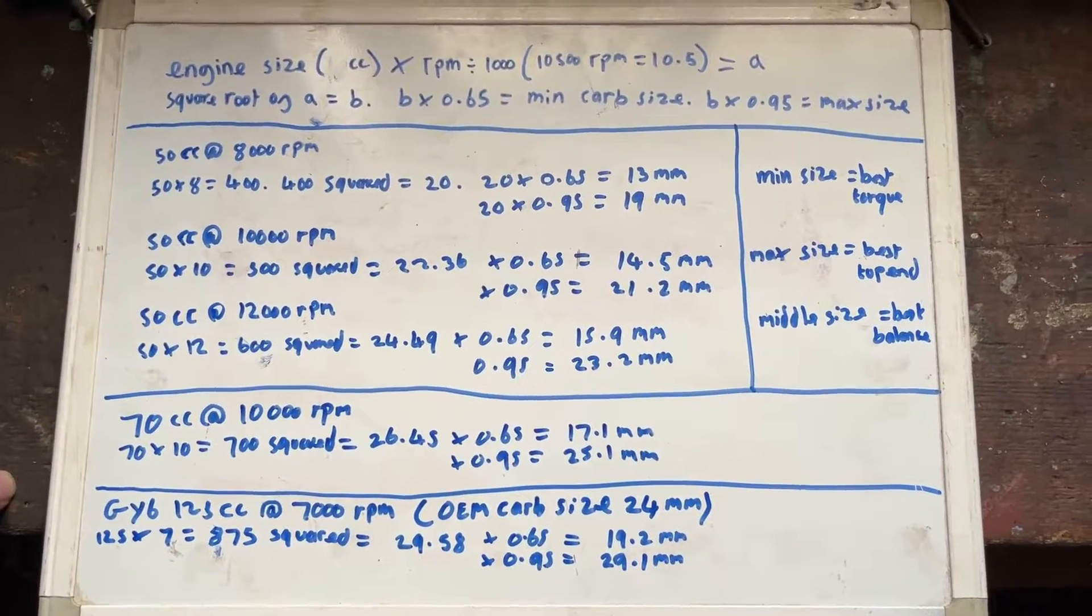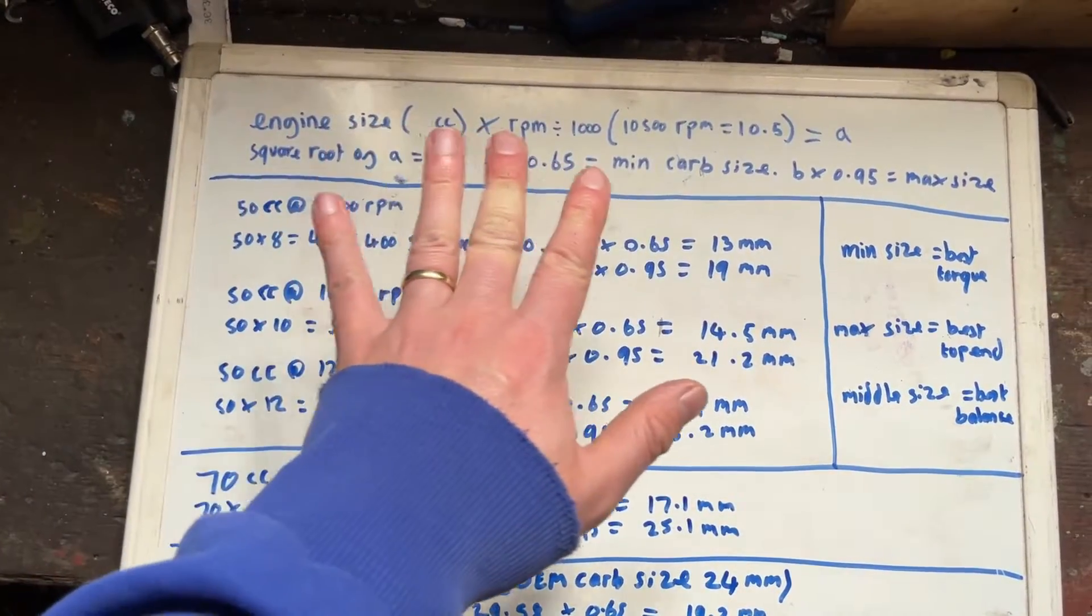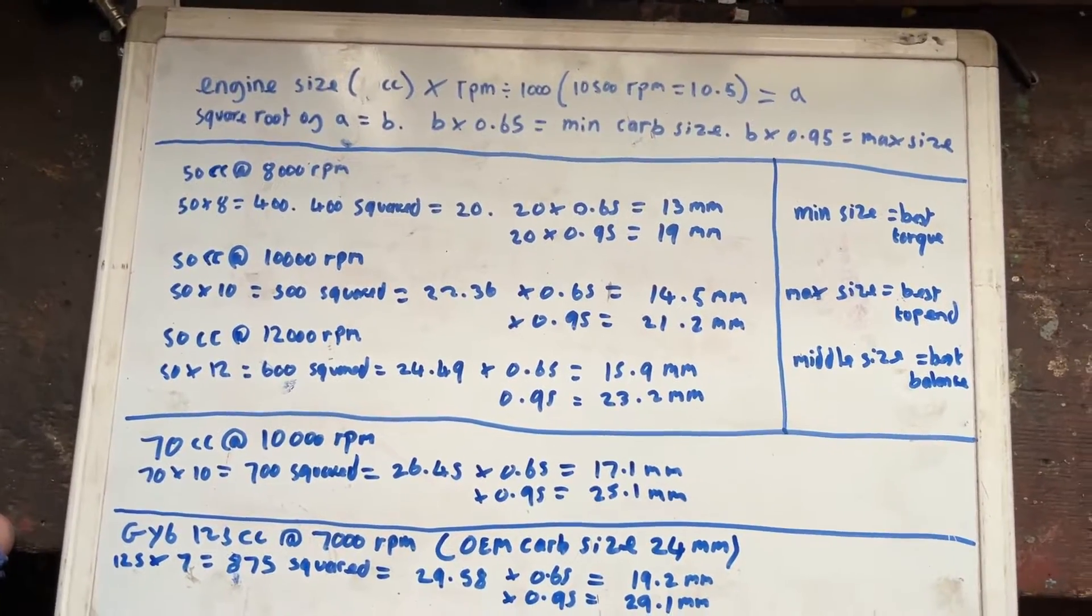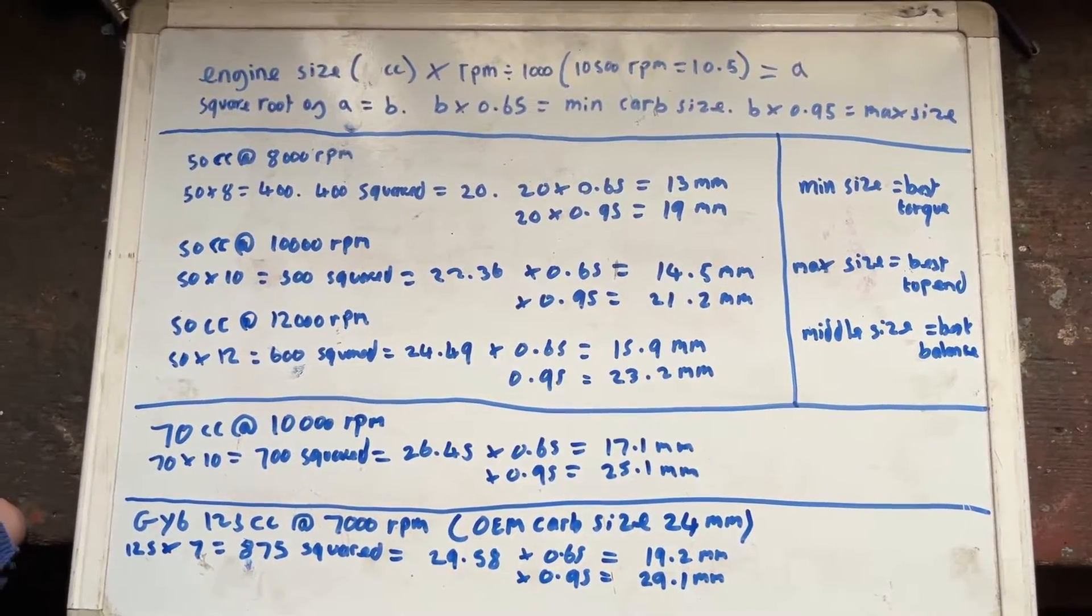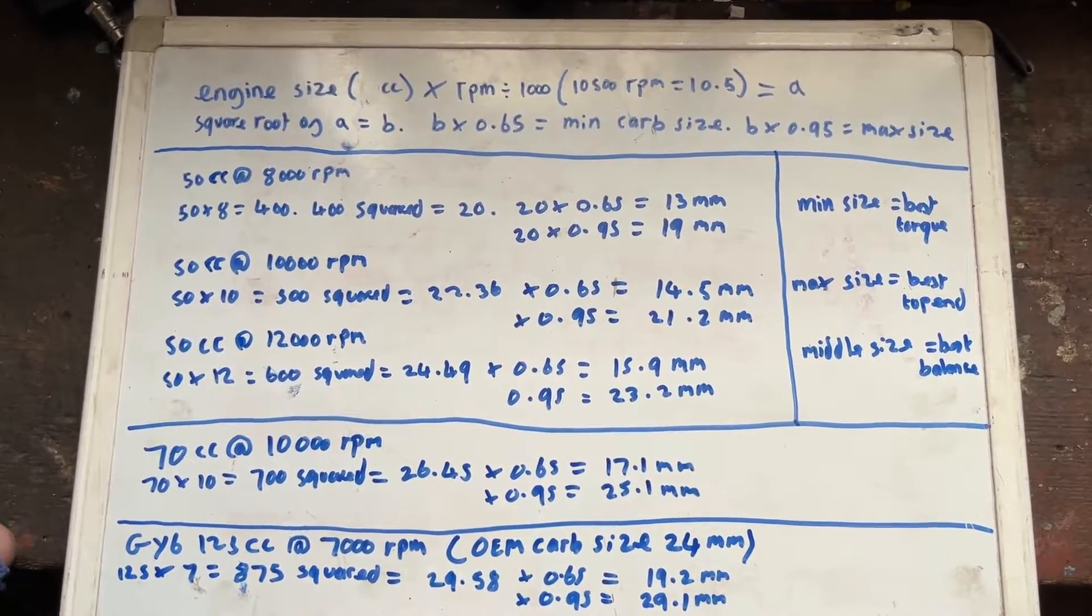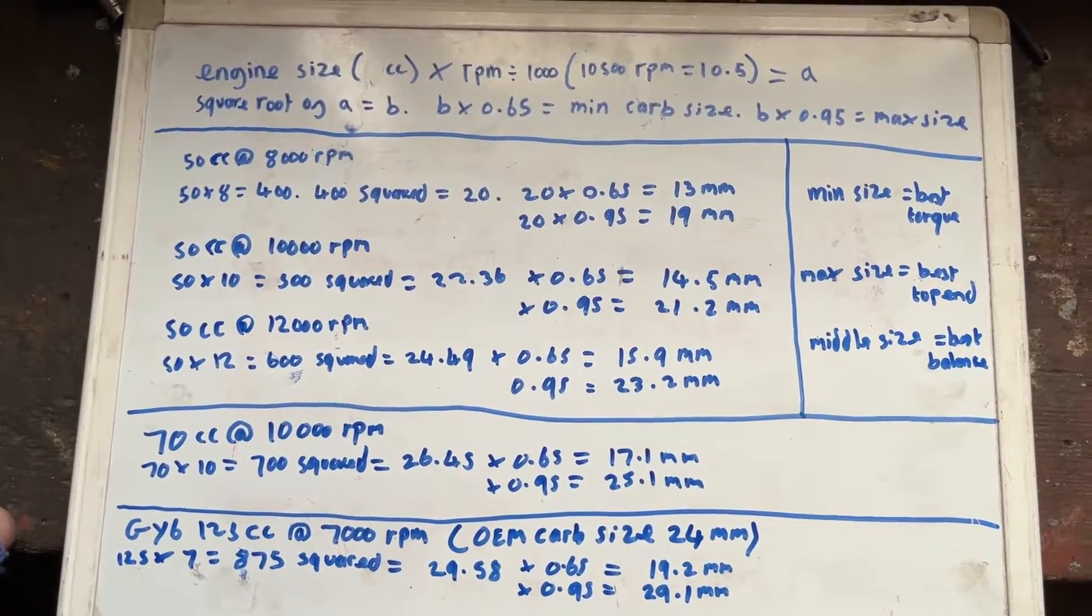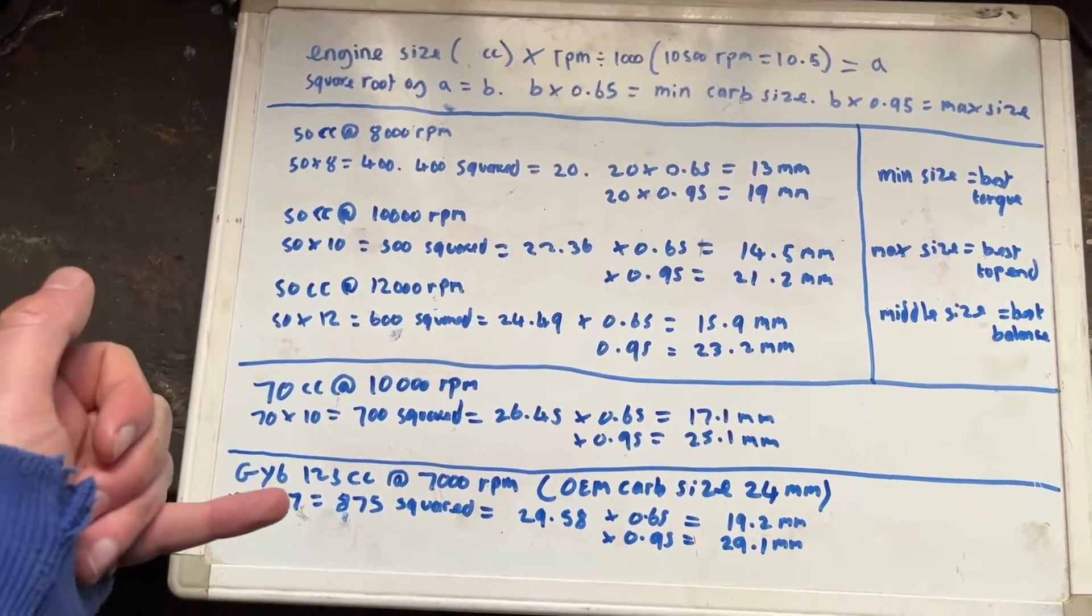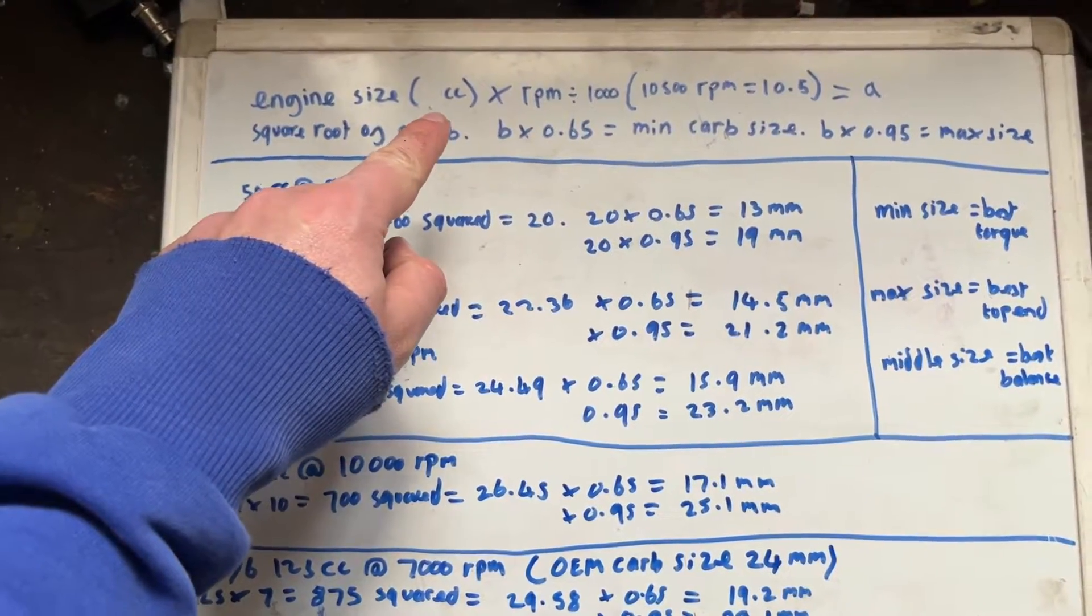Luckily there's quite an easy way of working this out. So what we have here is a little equation. Now you're going to need to know two things. The first thing you're going to need to know is the size of your engine in cubic centimeters. Now I would like to think that most of you know this, especially if you're tuning an engine. So for example is it 50cc, do you have a 70cc kit on it, is it a 125cc? That's the first bit of information we need.